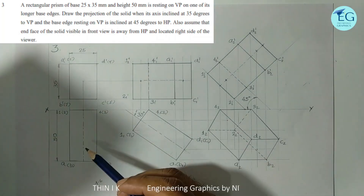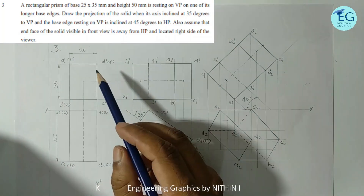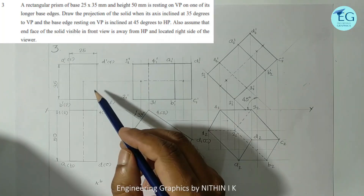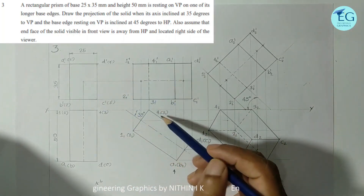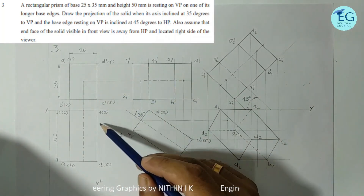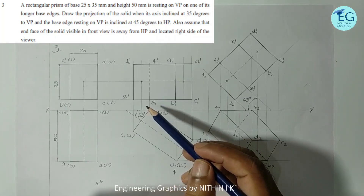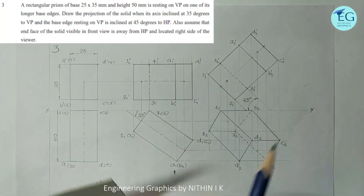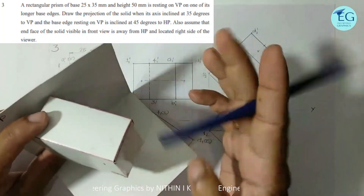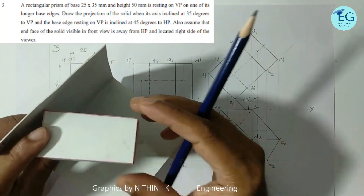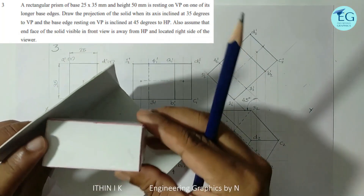This stage is worth 4 to 6 marks. The VP resting condition is shown in the top view. The axis is inclined at 35 degrees to VP. For the axis of VP to make an angle of 35 degrees, the top view is used as the reference.